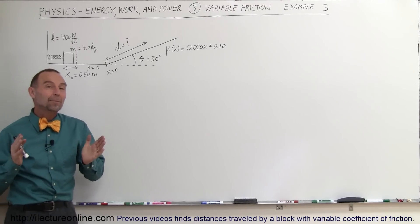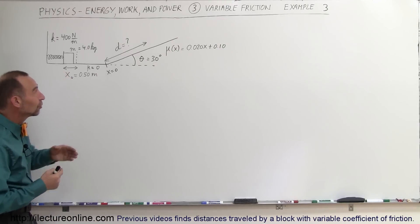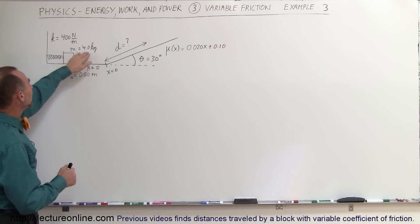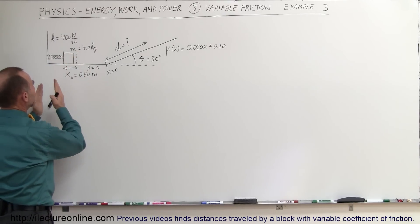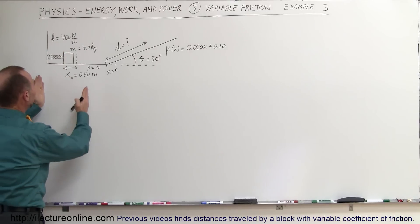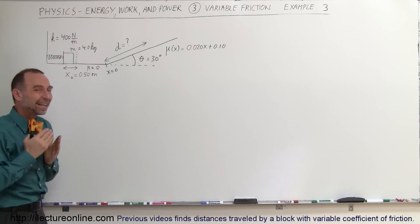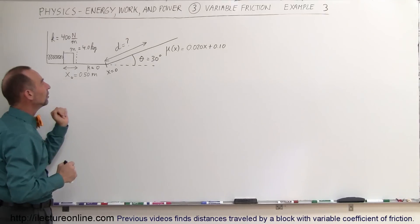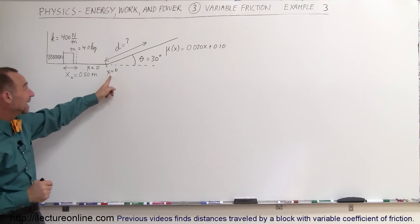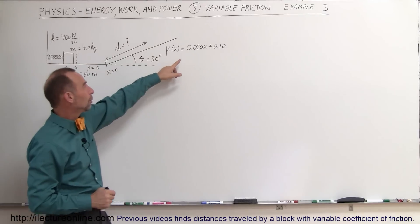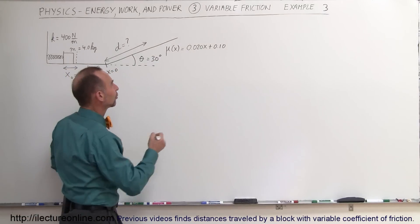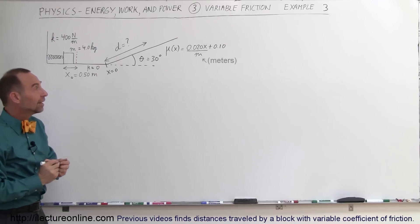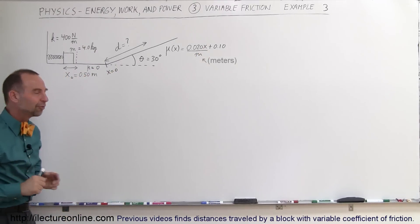Welcome to Electron Line. Here's our third example of how to calculate frictional forces when the coefficient of friction is not a constant. A block with a mass of 4 kilograms is pushed up against a spring with a spring coefficient of 400 N/m and a compression distance of 0.5 meters. When let go, how far up the incline will the box slide if the coefficient of friction on the horizontal portion is zero, and starting at x equals zero at the bottom of the incline, mu equals 0.02x plus 0.1 (divided by meters to keep units consistent)?